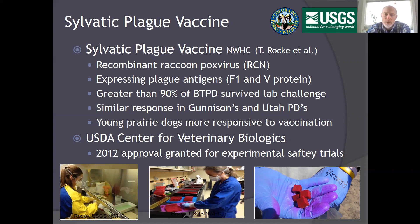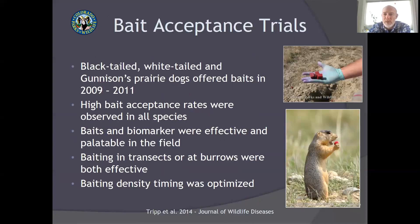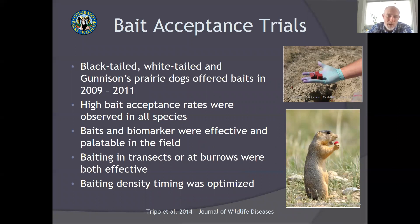These laboratory trials led us to get approval from the Center for Veterinary Biologics to start field trials. Before we could start, we had to look at the baits and figure out how to get prairie dogs to eat them. We examined how many baits per acre, what time of year the bait is palatable, and what sort of biomarker we could use to monitor bait uptake. Those were all things we worked through before going into the field with the vaccine.